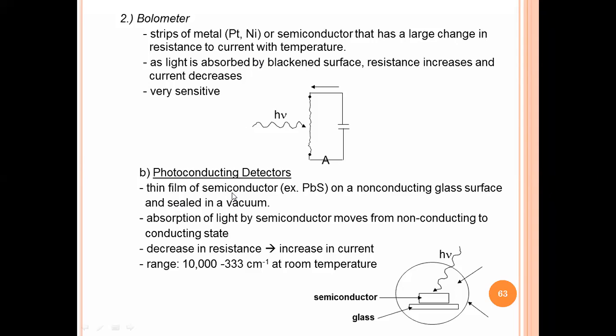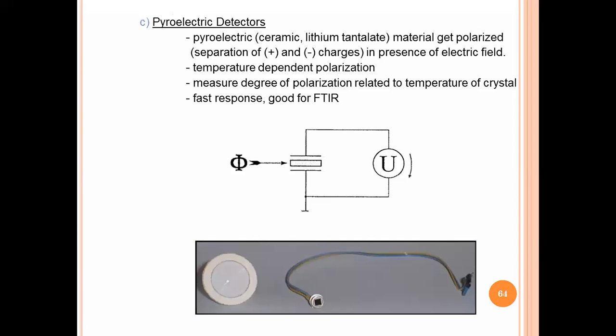Next one is photoconductive detectors. A thin film of semiconductor on a non-conducting glass surface and sealed in a vacuum. Semiconductor on a glass surface, non-conducting glass surface, sealed in a vacuum tube. Absorption of light by semiconductor moves from non-conducting to conducting states. Decrease in resistance, increase in current. The range generates 10,000 to 333 per centimeter wave number at room temperature. Remember the construction and working, and how much radiations are detected at what intensity or frequency by the individual detector is important.